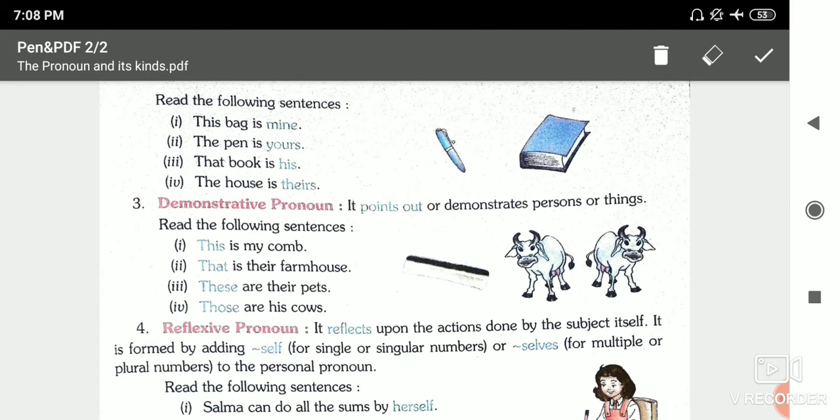The house is theirs. We can write this is their house, or the house is theirs. We replaced 'their house' with just 'theirs'. So this is possessive pronoun.